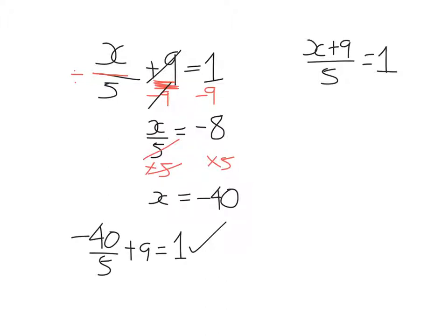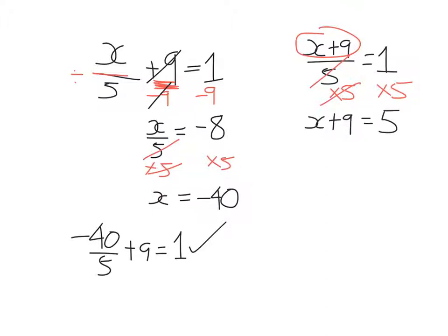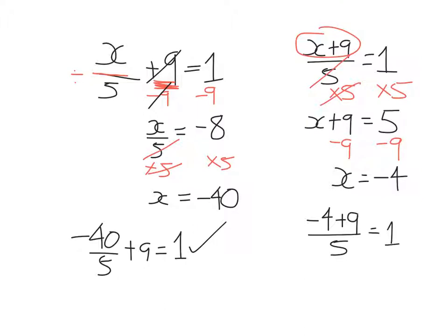Now let's look at the equation on the right. The only difference is order of operations: here I've added 9 first and then divided by 5. So I first undo dividing by 5 by multiplying each side by 5. The 5s cancel, leaving x plus 9 — I don't times the x by 5. On the right hand side, 1 times 5 is 5. Then I undo adding 9 by subtracting 9, so x equals 5 minus 9, which is minus 4. Different order of operations means a different solution.